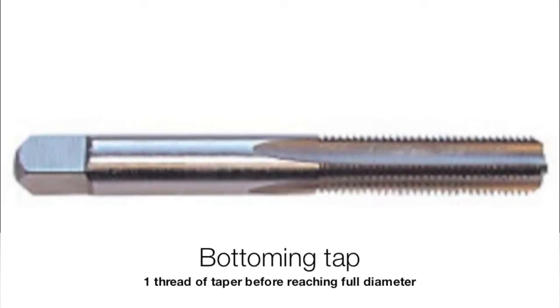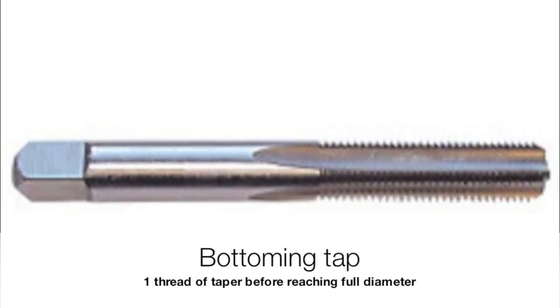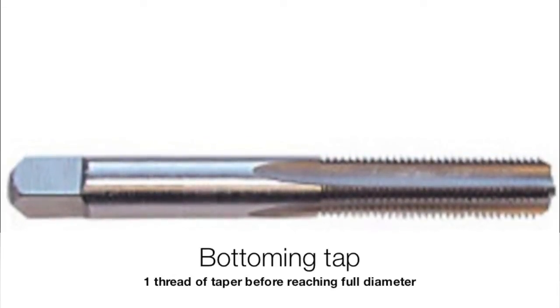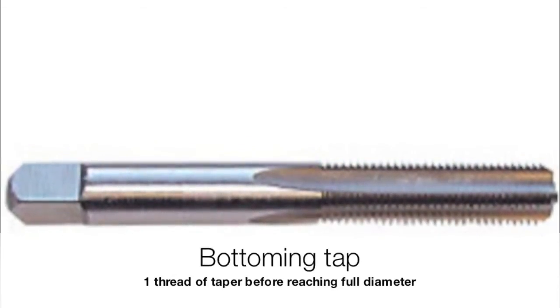Finally, a bottoming tap is used to carry the thread at full diameter to the bottom of a blind hole. A bottoming tap typically has one thread of taper.